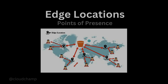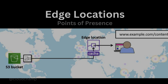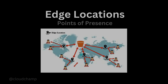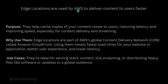Next is edge locations. Edge locations are generally used for caching — storing data that is accessed frequently so customers don't have to fetch it from the origin server. We use this along with S3 or CloudFront, AWS's CDN service. Edge locations deliver content to users very fast, caching copies of your content closer to the user, which reduces latency, improves speed, and results in better user experience.